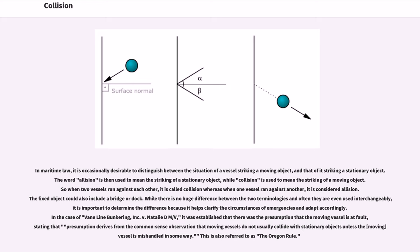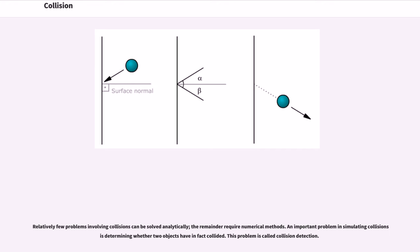In the case of Bainline Bunkering Inc. v. Natalie DMV, it was established that there was the presumption that the moving vessel is at fault, stating that presumption derives from the common-sense observation that moving vessels do not usually collide with stationary objects unless the moving vessel is mishandled in some way. This is also referred to as the Oregon rule.